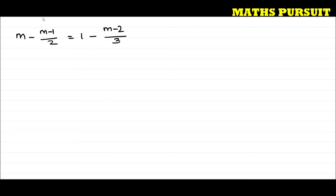The equation given to us is m minus (m minus 1) divided by 2 is equal to 1 minus (m minus 2) divided by 3. The question is simply asking us to solve this equation.